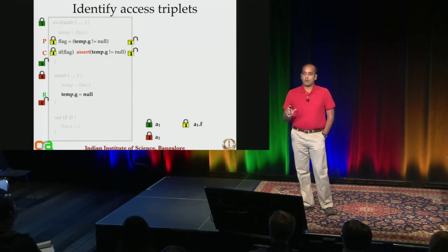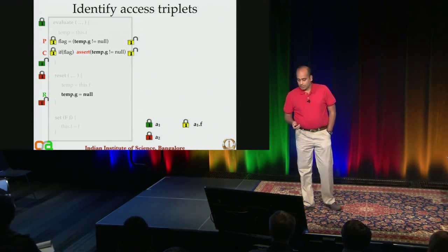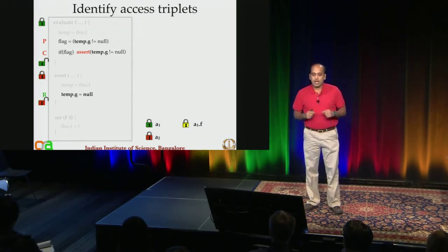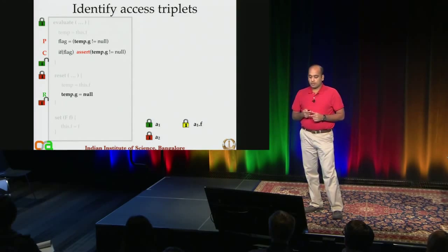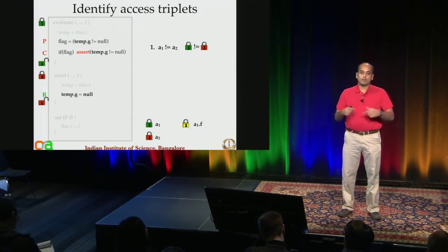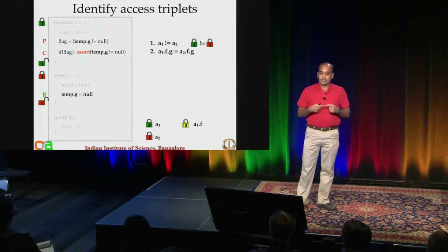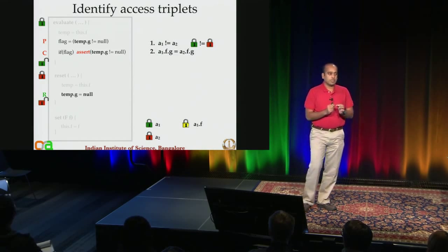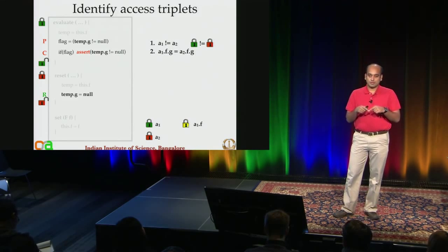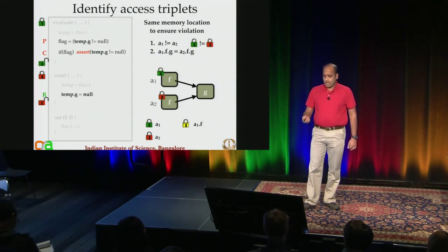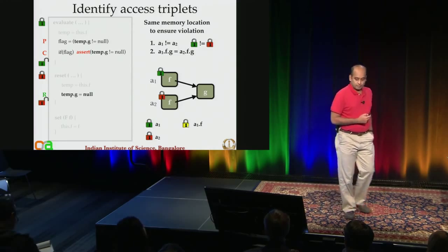The locks acquired around these accesses are also important. The lock consistently acquired around this.f in evaluate is only the green lock — the yellow lock is just held and released after each access, so it's not interesting. For reset, there is only the red lock. We need to ensure that A1 and A2, represented by green and red locks, should not be the same — if they are the same, concurrent access is not possible. Furthermore, we need to ensure that location A1.f.g is the same as A2.f.g for there to be a shared memory access.